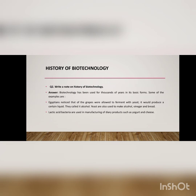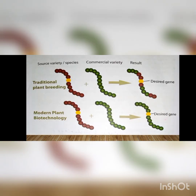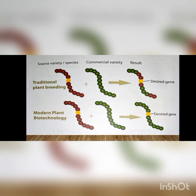You can see the traditional plant breeding diagram. Look at the circle — there is a red and purple color circle. The center is a yellow circle which is the desired gene. This is the desired gene which has a special value.